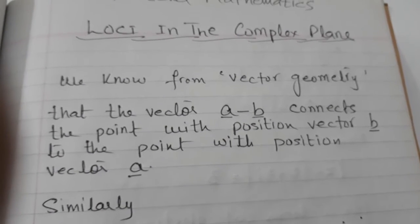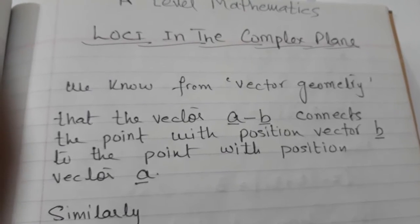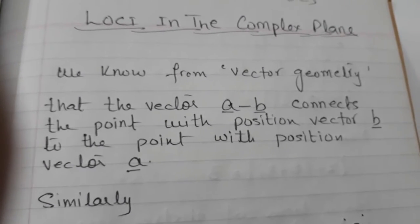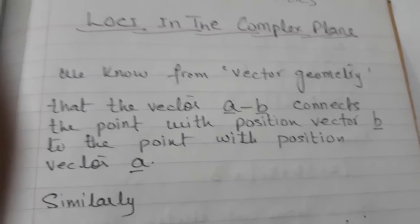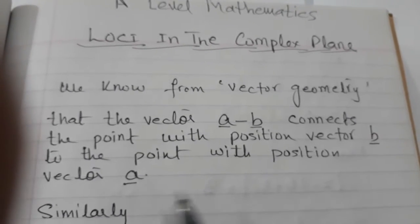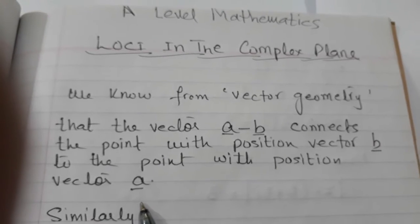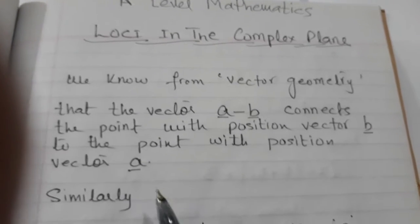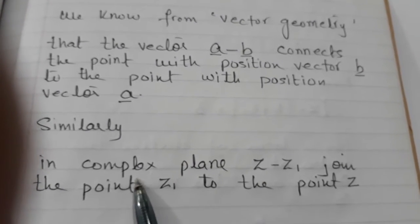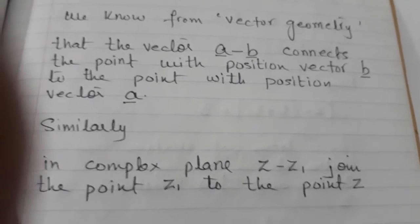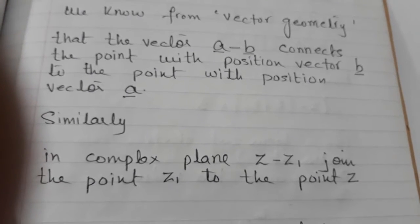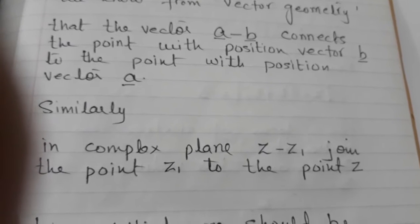Now let's start with the basic understanding of vector geometry. When we see vector A minus B, it means position vector B is connected to position vector A. Similarly, if you see it written as Z minus Z1 in the complex plane, it means you are joining the point Z1 to the point Z.